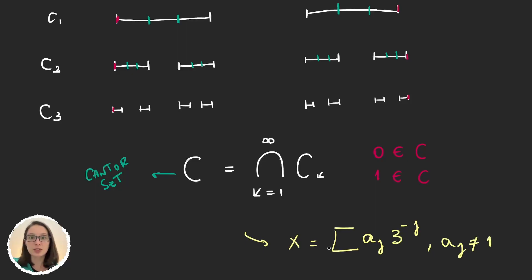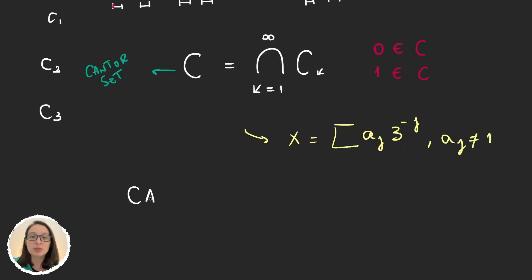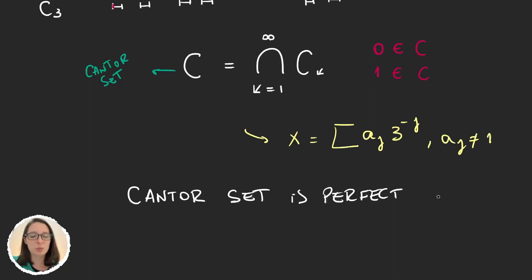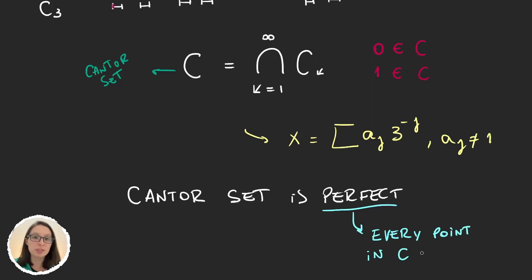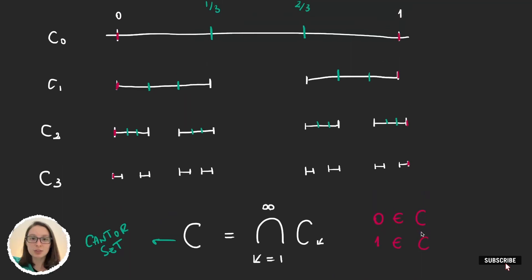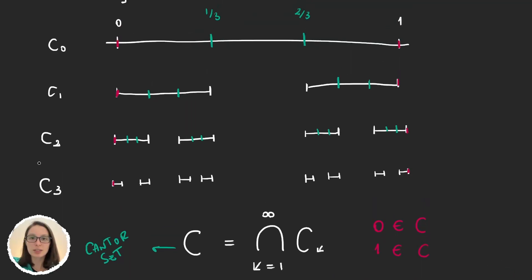We will see that the Cantor set is uncountable and that it has Lebesgue measure zero. To prove first that the Cantor set is uncountable, we will see that it is perfect — and not because it's a beautiful set, which it is — but because perfect means that any point in the set is a limit point. That is, for any point in the Cantor set, we can find a sequence of points in the Cantor set that converge to that point. So let's look at each of the C_k's that form it.